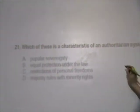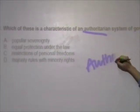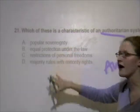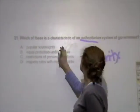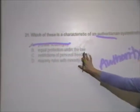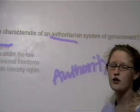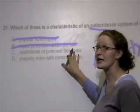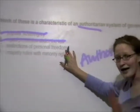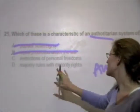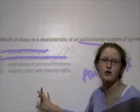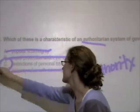Which of these is a characteristic of an authoritarian system of government? Authoritarian — think authority. We're looking for the one that's going to look like the government has the authority. Popular sovereignty — that's when people are involved; they're not going to be the authority. Equal protection under the law — in authoritarian government, they're going to make all the laws and it's not up to the people. Restrictions of personal freedoms — probably it, because an authoritarian government decides what you can and cannot do. Majority rules with minority rights — nope, because the government doesn't care about minority or majority. So C is the right answer.